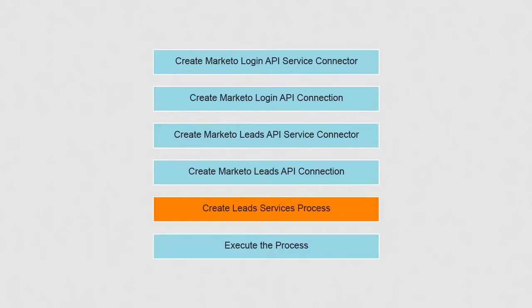Now we have two disjoint Marketo service connectors. One of them gives access_token as output, whereas the other expects access_token as input. We will need to weave these two connectors into a single unit so that the user can perform coding paradigms like decision making and parallel path execution. We will do this using a process and call it the Marketo API Business Process.